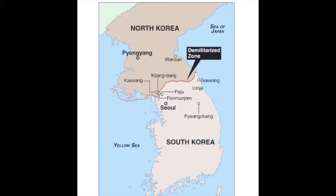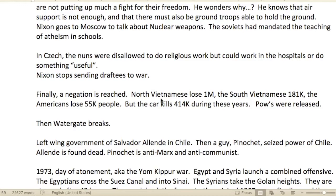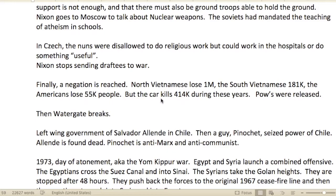The Viet Cong, using Soviet weapons, crossed into the demilitarized zone. The South Vietnamese fled. There were only about 6,000 combat American troops in the South. Nixon wrote that the South Vietnamese were not putting up much of a fight for their freedom and wondered why. He knew air support was not enough — there must also be ground troops to hold the ground.